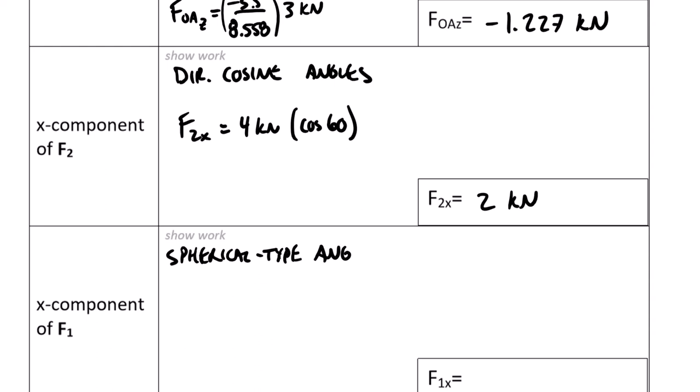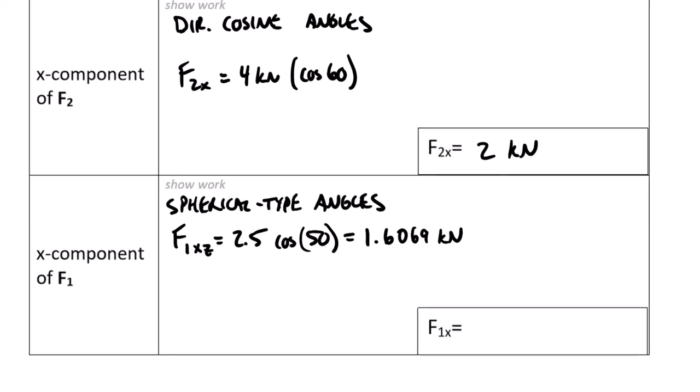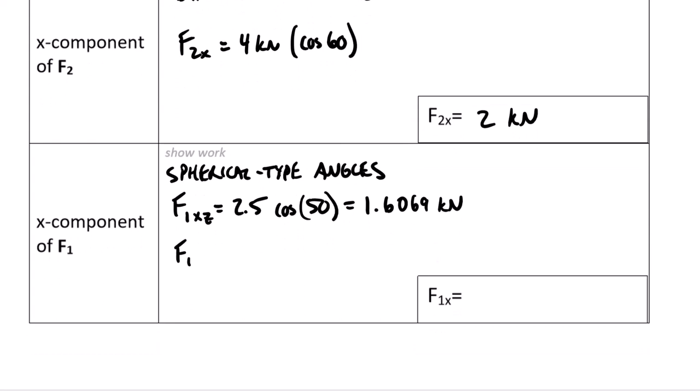These are spherical type angles. Notice I say spherical type angles because these were given a little bit differently than just angles from the x-axis in the xy plane and from the z-axis. First we project F1 down into the xz plane, so F1 xz equals 2.5 times cosine of 50 degrees. This is just a length, not really a vector component, so we don't really need to give it a sign because we're just using it as a length of a triangle.